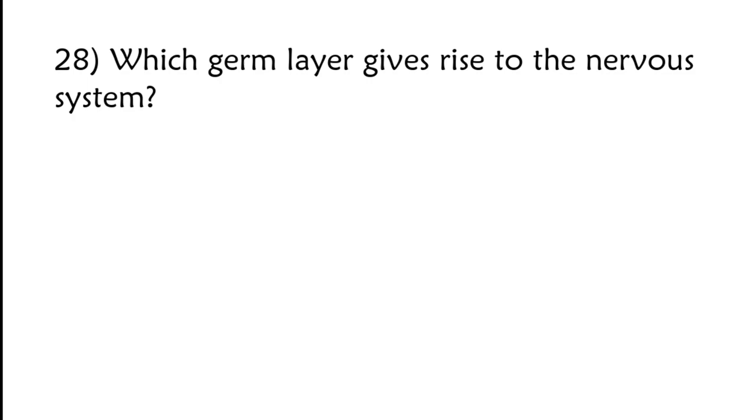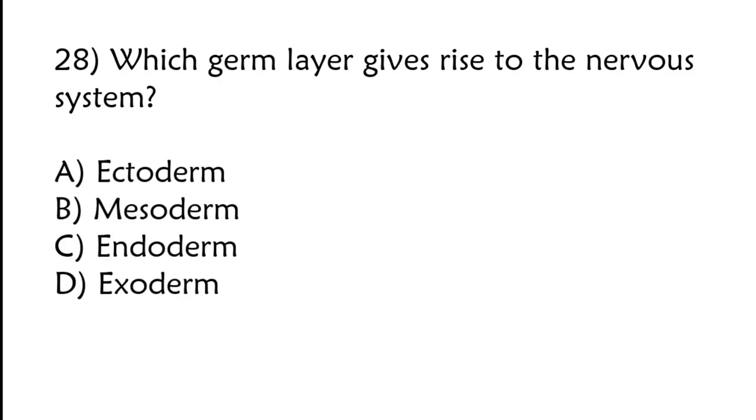Which germ layer gives rise to the nervous system? Ectoderm, mesoderm, endoderm, exoderm? Correct answer is option A, ectoderm.